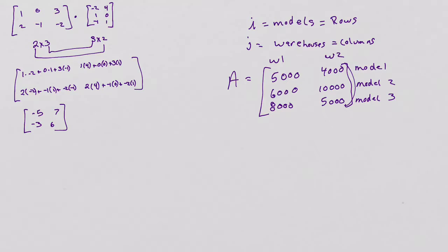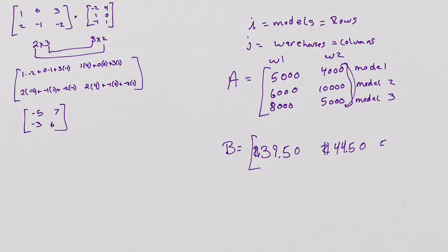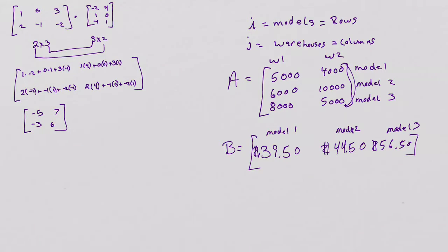As we go further into the problem, it says the price per unit is represented by matrix B, which is $39.50, $44.50, and $56.50. These are the price per model — $39.50 is model 1's price, $44.50 is model 2's price, and $56.50 is model 3's price.